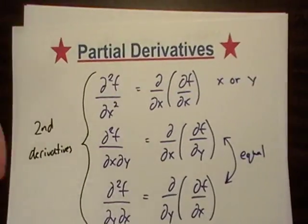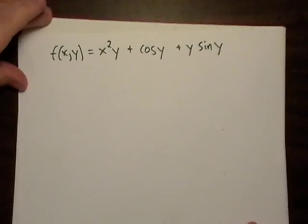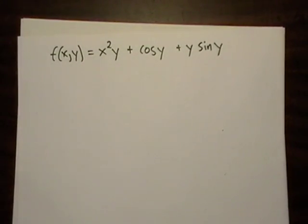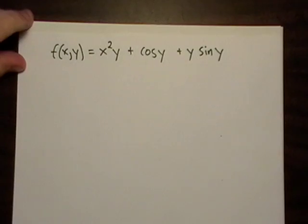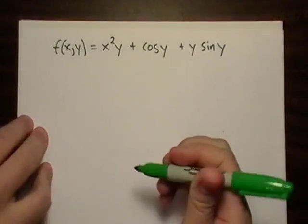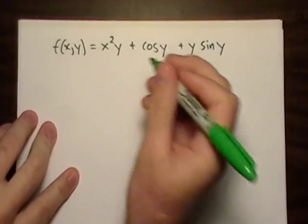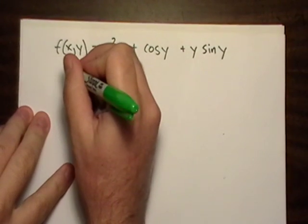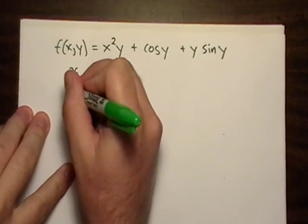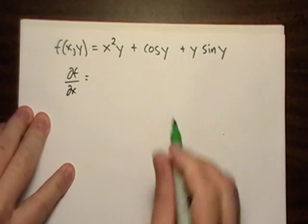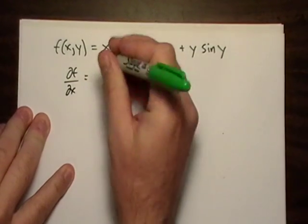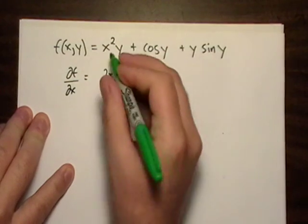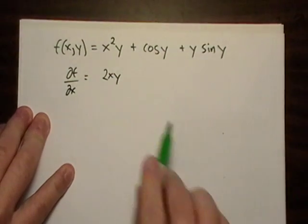So basically, what I'm going to do is we're going to take a look at this function. And we're just going to find all the partials, the second partials and the mixed partials. So before I do anything, I'm just going to need to find the regular partials. I'm just going to pick to go with x first. So the first term, that's going to be 2xy, but the constant comes along with it.